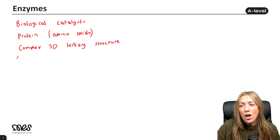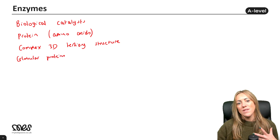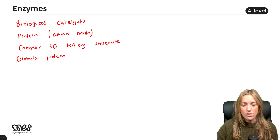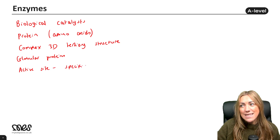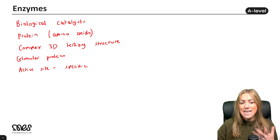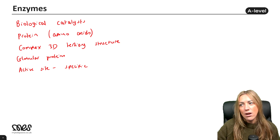Enzymes are globular proteins, so they have more of a spherical shape as opposed to the fibrous shape of structural proteins. They have an active site, and the active site is specific to a particular substrate. From GCSE, we say the active site is complementary to the substrate — that's an important word to use in answers.